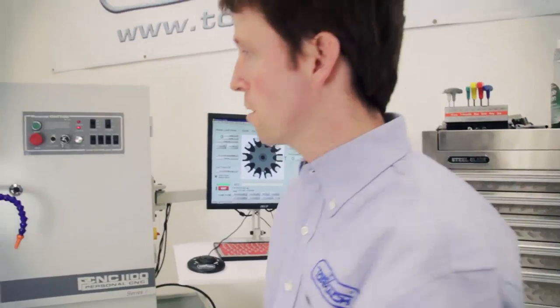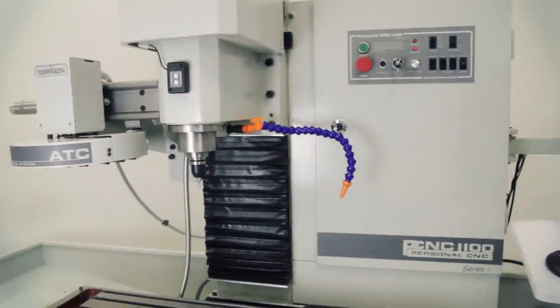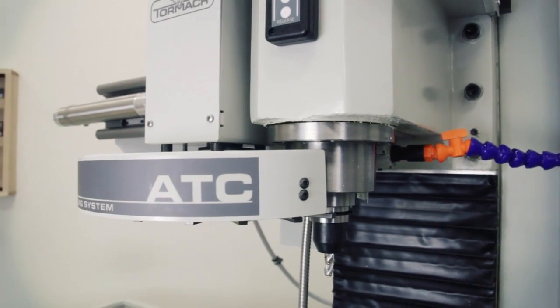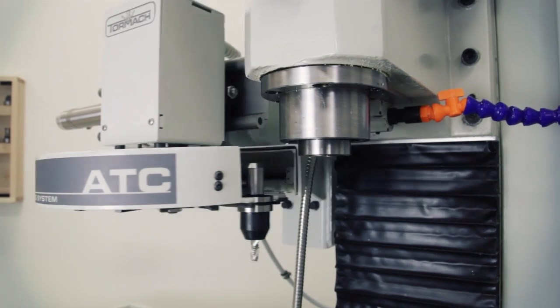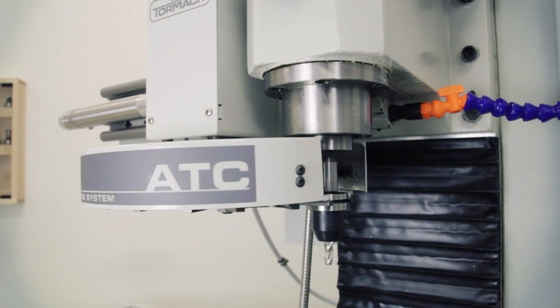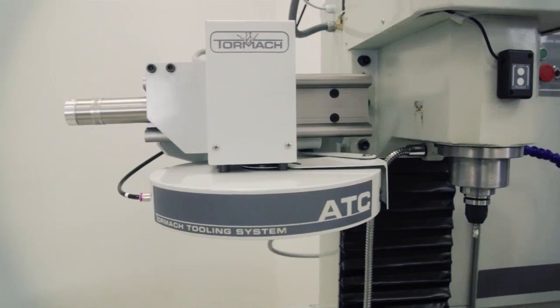Now for a trial run. I'll go ahead and put a tool in the spindle. I'll call it tool one. All right, well that concludes our video on how to mount and align the ATC. I hope you enjoy this Tormach product and good luck making chips.